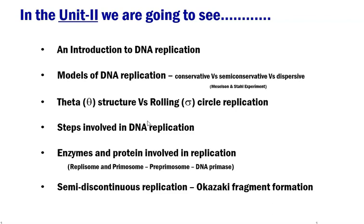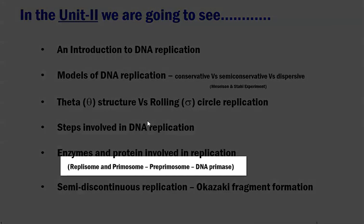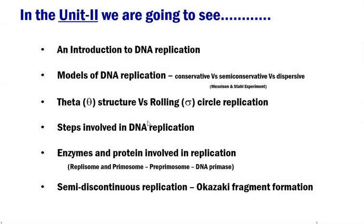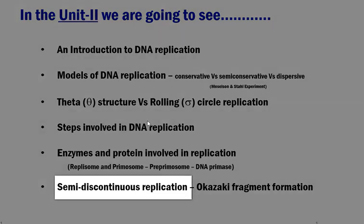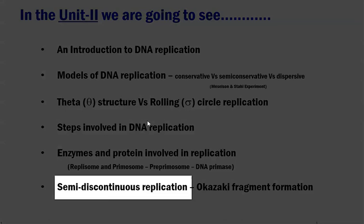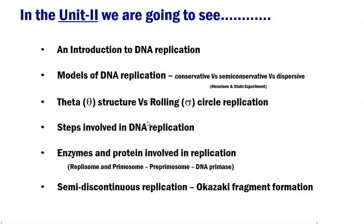These proteins complex together and form special structures such as the replisome, pre-primosome, and primosome — all of which we are going to see in detail. Finally, the method by which semi-conservative replication takes place in living organisms is commonly referred to as semi-discontinuous replication. One strand of DNA is synthesized continuously, whereas the other strand is synthesized in a discontinuous manner, leading to the formation of Okazaki fragments, which we will explore in future lectures.